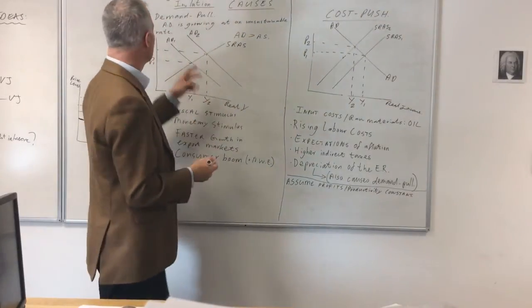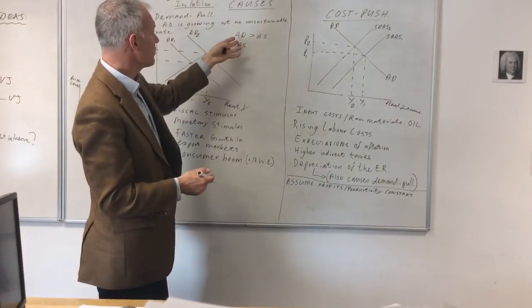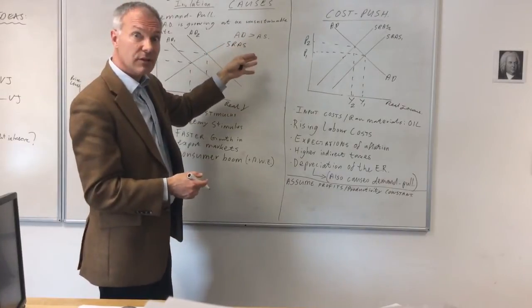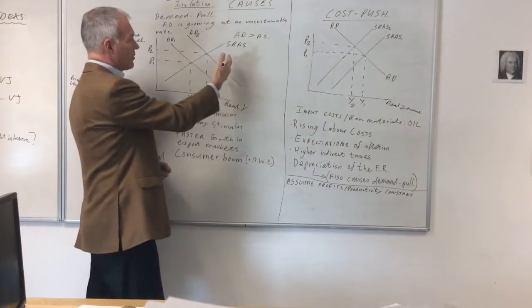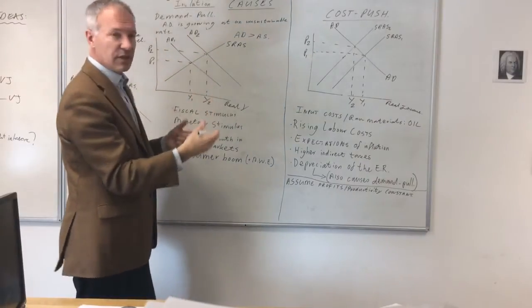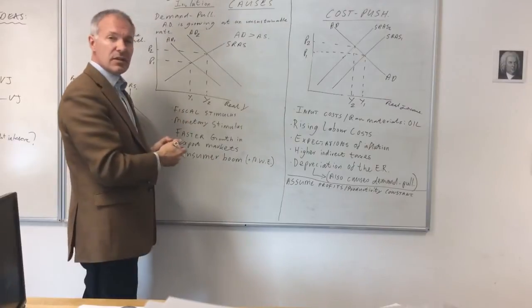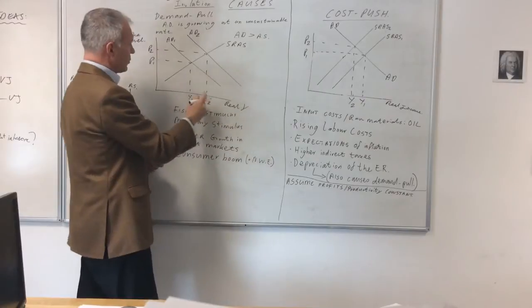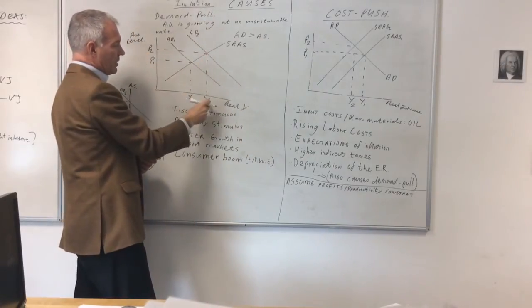Demand pull inflation occurs when there's excess demand in the whole economy relative to aggregate supply. Aggregate demand is growing at an unsustainable rate, at a greater rate than aggregate supply. This can be shown by a rightward shift in the aggregate demand line. What happens is that firms take advantage of that by pushing up prices as supply is increasingly low relative to aggregate demand. Here we get an increase in the average price level and an increase in output.